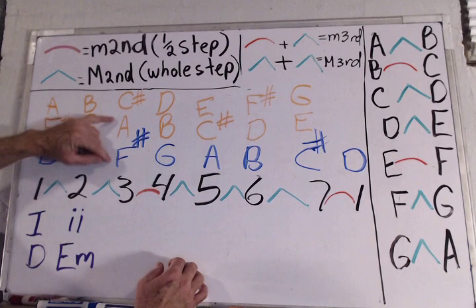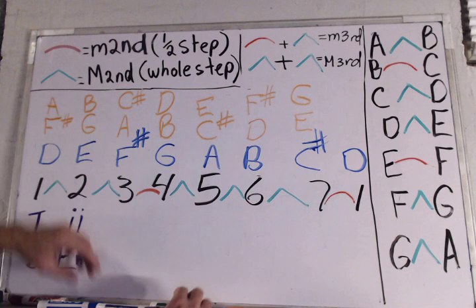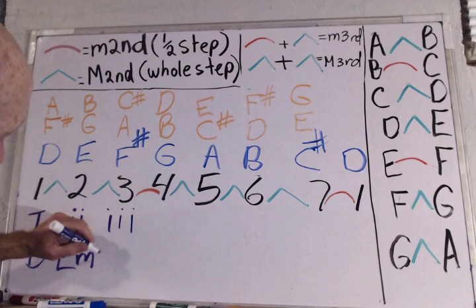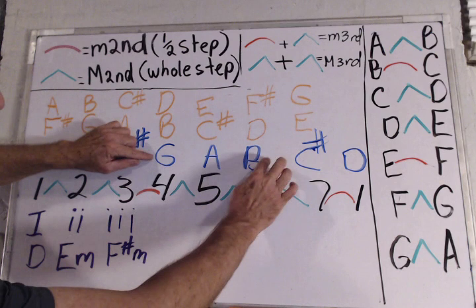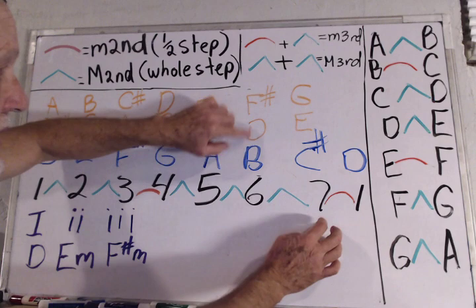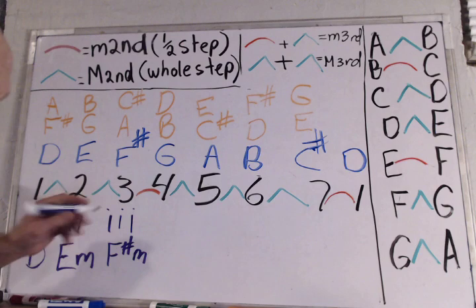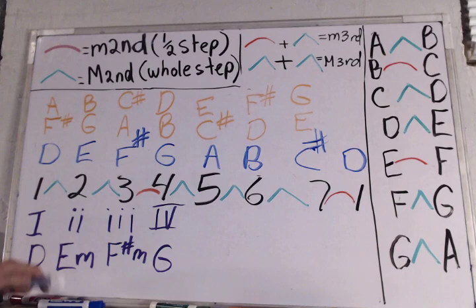The three chord, F sharp, A, C sharp. F sharp to A, step and a half, minor third. A to C sharp, two whole steps, that's a major third. Again, that equals minor third plus major third gives us a minor chord. So we're lower case, that's the three chord, and it is F sharp minor. Going to the four chord, we have G to B, that's two whole steps, that's a major third. Between the B and the D, you've got half, whole step, half step, minor third. That is, like the one chord, a major chord. So that's going to be uppercase Roman numeral four, and our four chord is the chord G in the key of D.